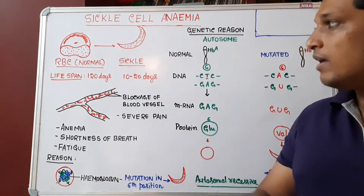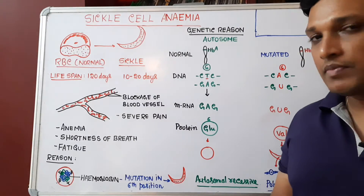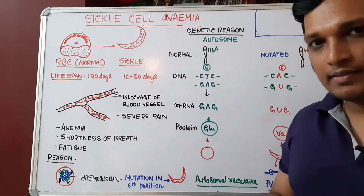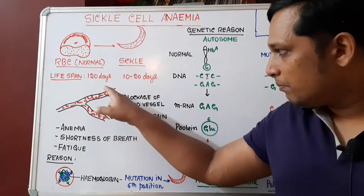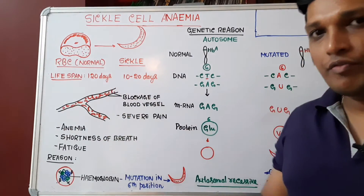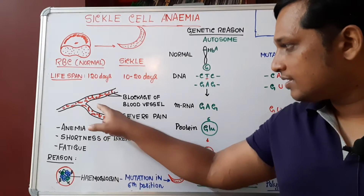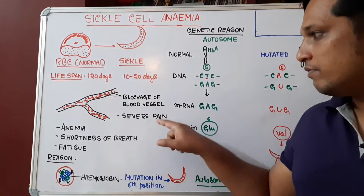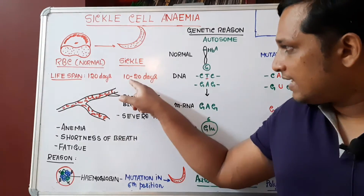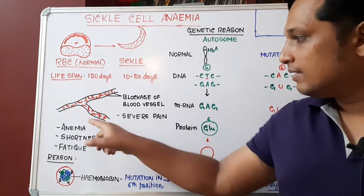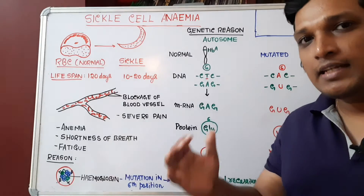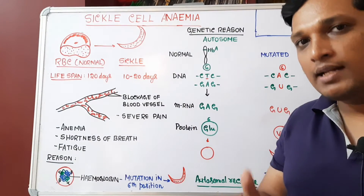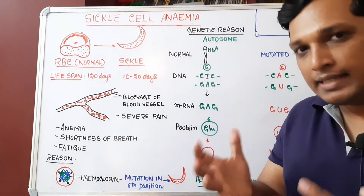When such sickle-shaped RBCs move through blood vessels, they block the movement of other RBCs and cause severe pain. The blockage of blood vessels causes severe pain. Since their lifespan is very short — only 10 to 20 days — the number of RBCs decreases.